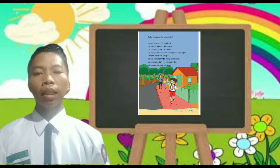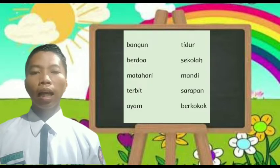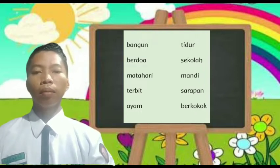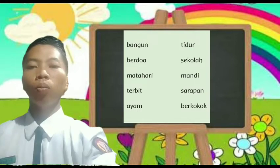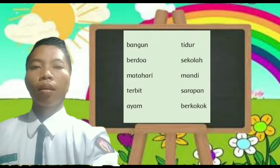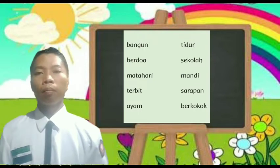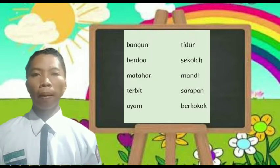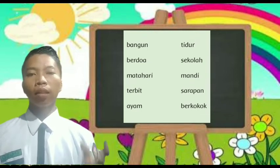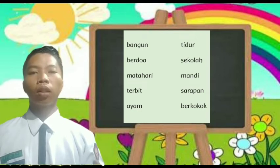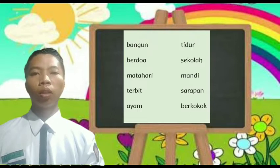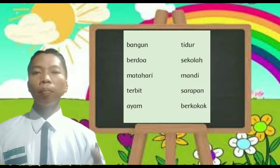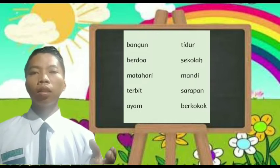Udin membaca kata-kata yang baru dipelajari — inilah ayah membantu Udin berlatih membaca. Inilah kata-kata yang dibaca Udin, perhatikan huruf-hurufnya lalu bacalah. Bangun. Mari kita eja: B-A BA, N-U NU, N — Bangun.